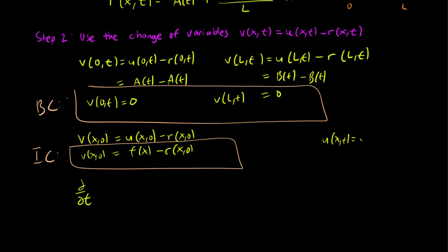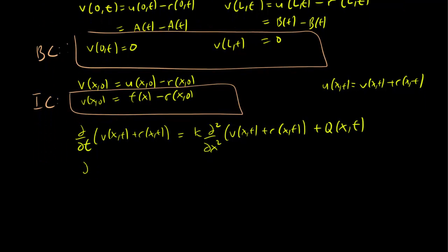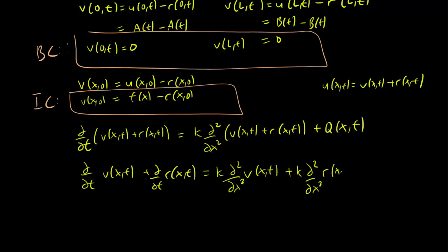So u is going to be equal to v plus r(x,t), just by solving for u instead. So our equation becomes ∂/∂t(v(x,t) + r(x,t)) equals k times ∂²/∂x² of (v(x,t) + r(x,t)) plus the Q(x,t) term. And when we distribute things out, we get ∂v(x,t)/∂t plus ∂r(x,t)/∂t. Unfortunately, since this isn't an equilibrium solution, the r(x,t) doesn't go away. And we have this really monstrous equation right here, equals k∂²v(x,t)/∂x² plus k∂²r(x,t)/∂x² plus Q(x,t).